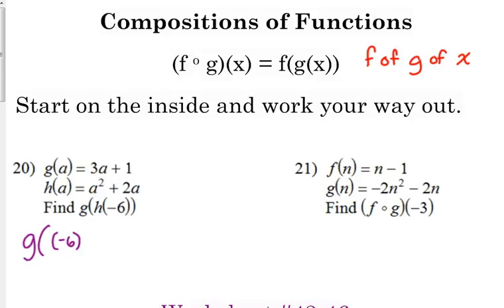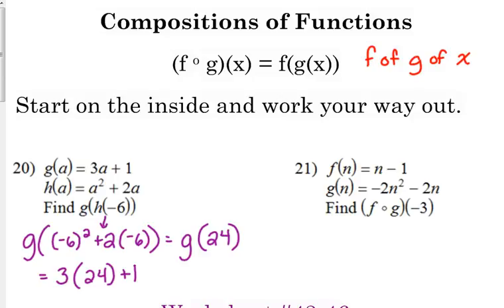So, that is negative 6 squared plus 2 times negative 6. Okay, I'm just putting it there in its place. Negative 6 squared is positive 36. Don't believe your calculator if it says negative 36. It means you did not put parentheses where you should have. 36 minus 12 is 24. So, we have replaced h of negative 6 with its value, 24. Now, we're just going to plug 24 into our g of x, or g of a function. 3 times 24 plus 1. So, 3 times 24 is 72 plus 1 is 73. So, g of h of negative 6 is 73.